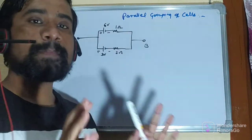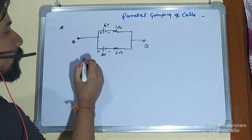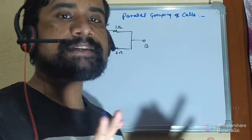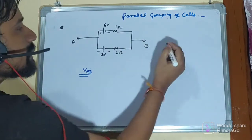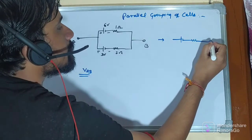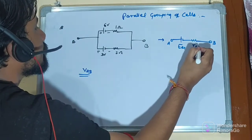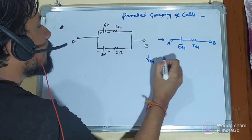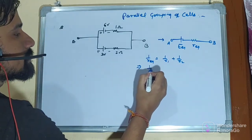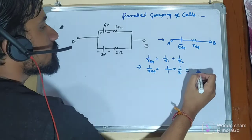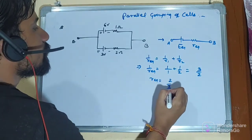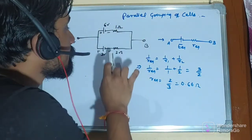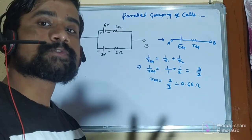We have two cells connected in parallel between points A and B — they share a common potential V_AB, confirming they are in parallel. We need to replace this with an equivalent circuit having E_eq and R_eq. First, 1/R_eq = 1/R1 + 1/R2 = 1/1 + 1/2 = 3/2, so R_eq = 2/3 ≈ 0.66 Ω. The equivalent resistance is less than both individual resistances (1 Ω and 2 Ω), which is the expected nature of a parallel combination.